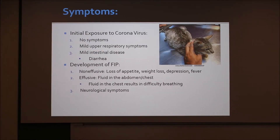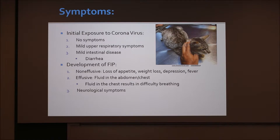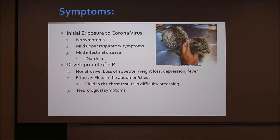When cats are initially exposed to the coronavirus, there are no symptoms, or they could have a mild upper respiratory infection, or a mild intestinal disease with diarrhea. Once it actually develops into FIP, there are two types of symptoms. First are the non-effusive symptoms: loss of appetite, weight loss, depression, and fever. It can then develop into effusive symptoms — buildup of fluid in the abdomen and chest — resulting in difficulty breathing. There can also be neurological symptoms such as nystagmus and seizures.